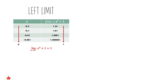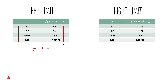We will make a table of values, but the numbers should approach 0 from the right. Then we will evaluate the function at these values. As you can see, when the values of x approach 0 from the right, f of x approaches 1. Thus, we can say that the limit of the function as x approaches 0 from the right is 1.